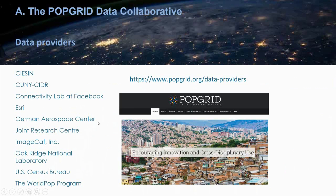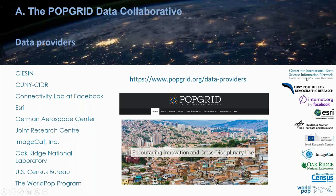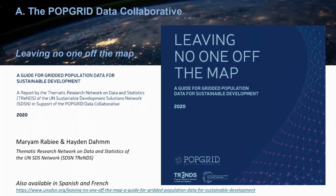Here is a list of data providers that are active in the PopGrid Data Collaborative: CIESIN, the CUNY Institute for Demographic Research, the Connectivity Lab at Facebook, ASRI, the German Aerospace Center, the Joint Research Center of the European Commission, ImageCAD, Oak Ridge National Laboratory, the US Census Bureau, and the WorldPop Program. This diverse group makes up this new way of cooperating.